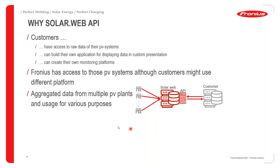Even when not using Fronius SolarWeb directly, you are interacting with it through an API, so Fronius still has access to all those PV systems. That guarantees you optimal support from Fronius in case of any issues. Also remember that for warranty registrations, depending on your market conditions, you will require access to Fronius SolarWeb to extend warranties on your Fronius devices.